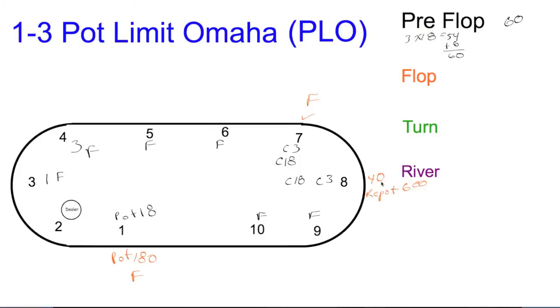This person checked, this person came out for 40. 40 times 3, because this person wants to pot bet. 40 times 3 equals 120 plus what was in the pot, 60—that gave us 180. That was a good pot bet. Now this person wants to repot the bet.